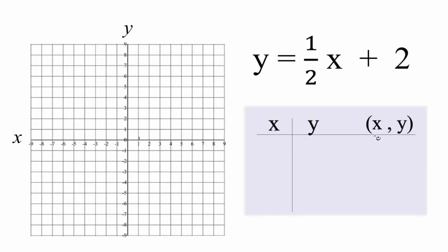So let's put some values in. We want to use values that we expect will show up here on our graph paper, won't be out here on the sides. Let's start with x equals one. So if we put one in for x, one half times one, that's one half plus two, we have two and a half here.